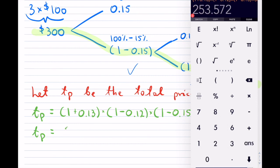Now we have our total price, which is $253. And to the cents, it's $0.57.